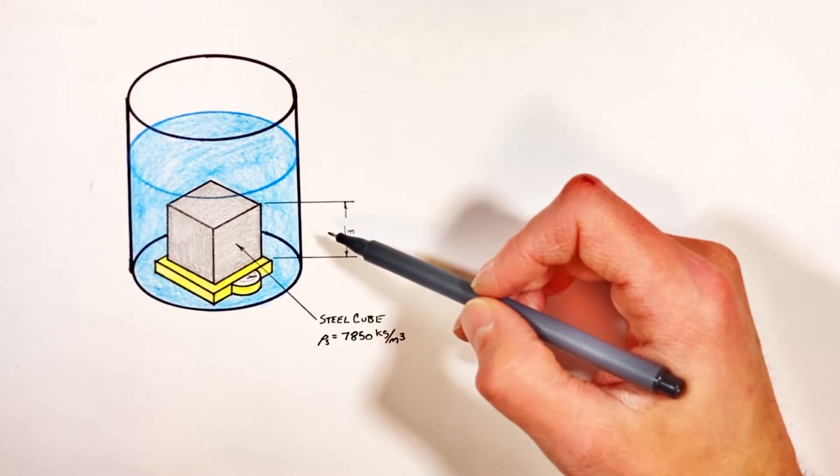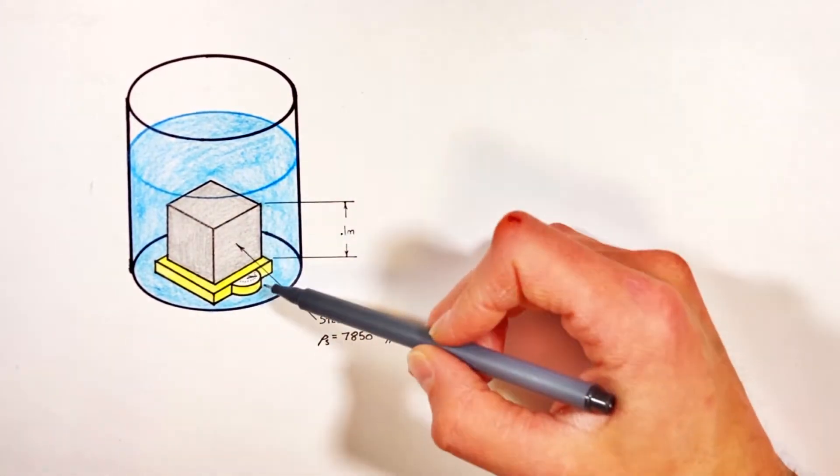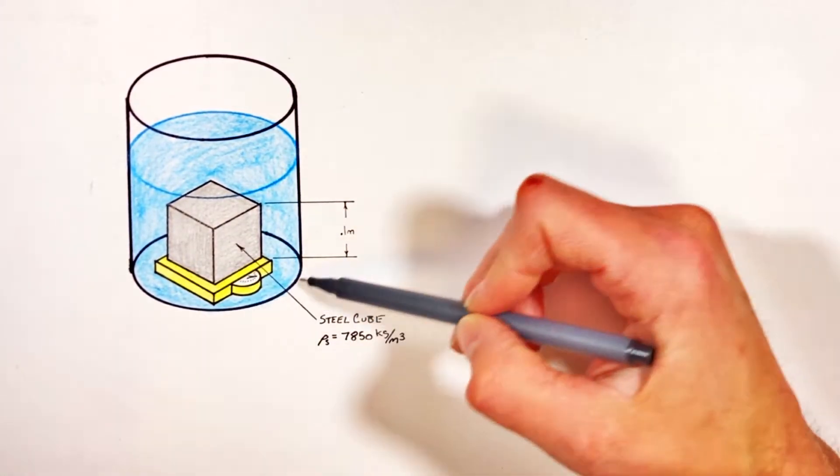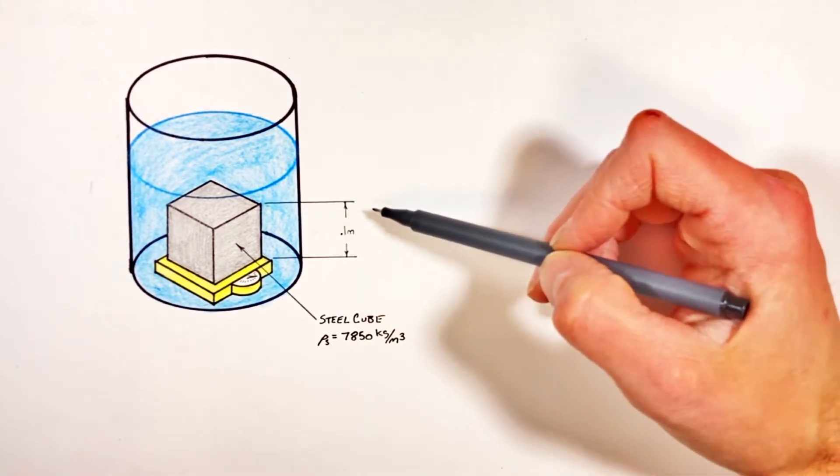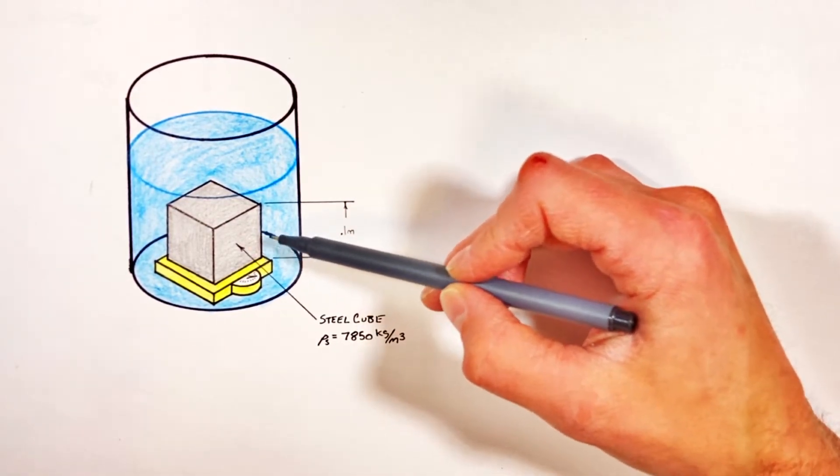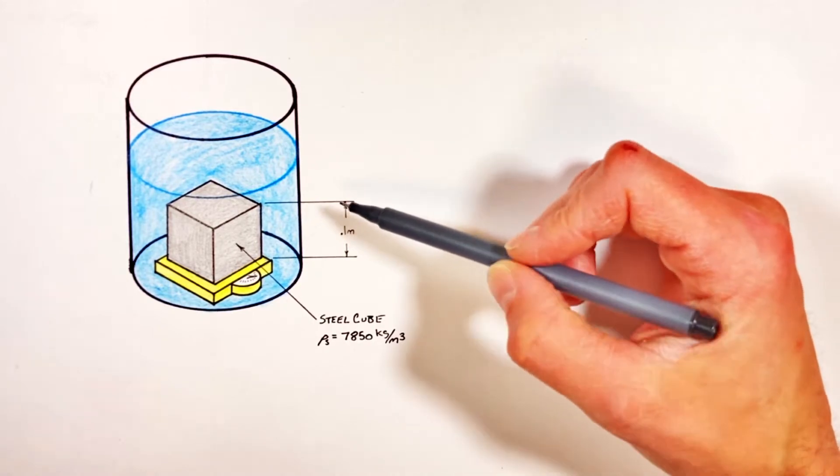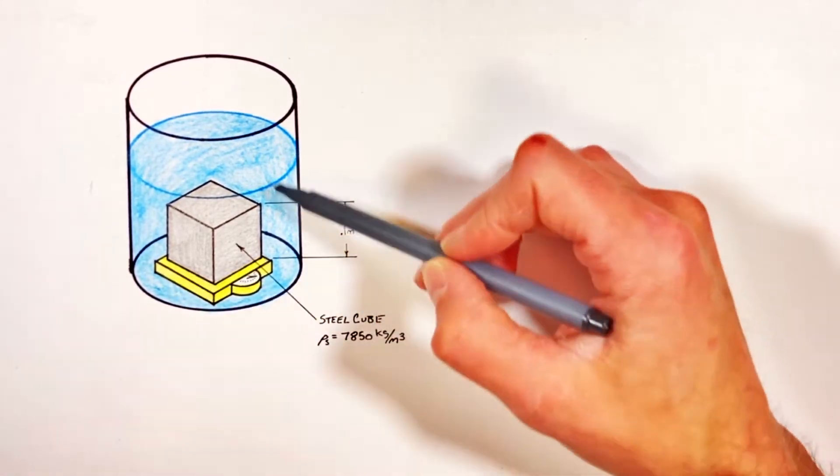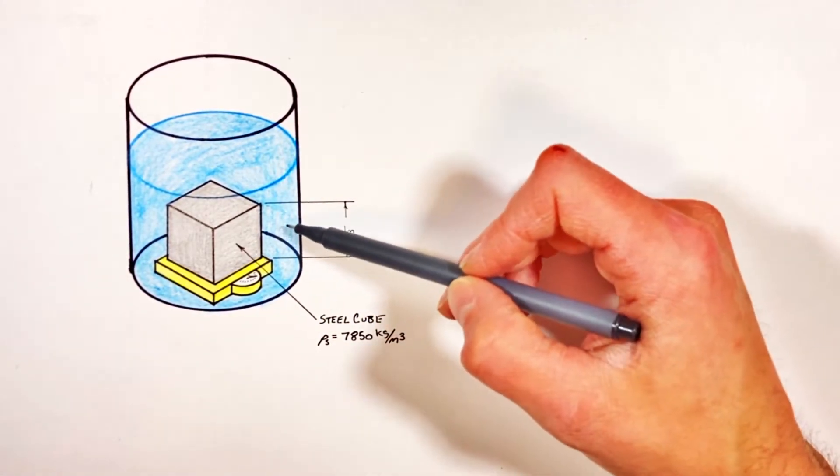All right YouTube, today we're going to take a look at the situation where we've got a steel cube sitting on a scale inside of a bucket of water. Now I fully understand that as soon as you see the situation you're probably thinking why, why physics would we have such a ridiculous situation.